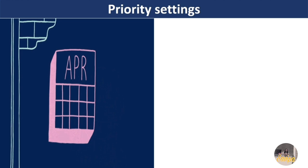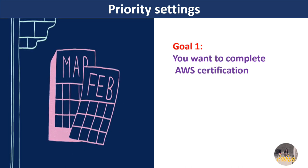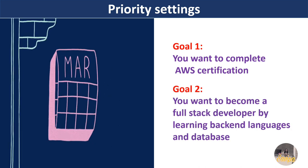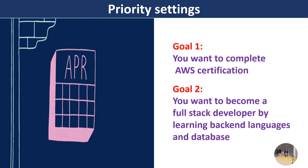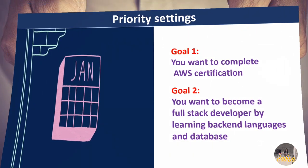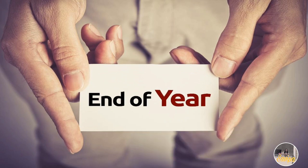For example, priority one could be that you want to complete an AWS certification, and priority two could be that you want to become a full-stack developer — suppose you are currently a front-end developer. So priorities are nothing but the goals you are setting for yourself for the whole year. Once you set these priorities, they will be sent to your manager or POC for review.